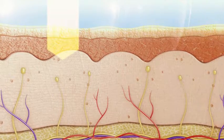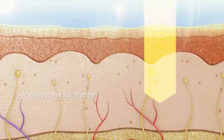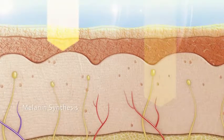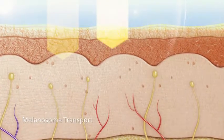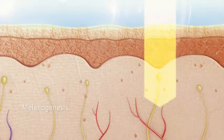Under UV exposure, our skin undergoes three major steps: melanosome formation, melanin synthesis and melanosome transport. The whole process is known as melanogenesis.